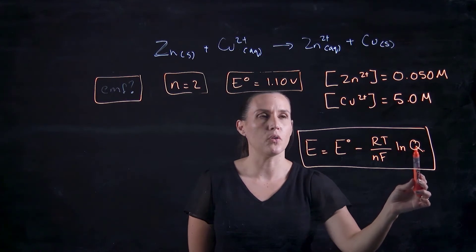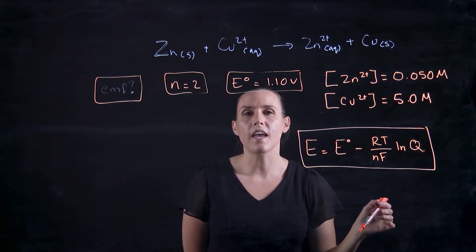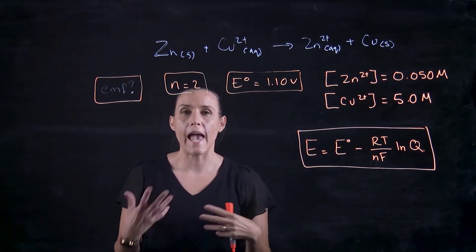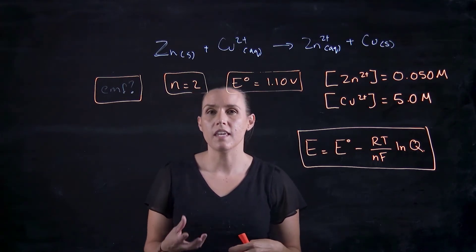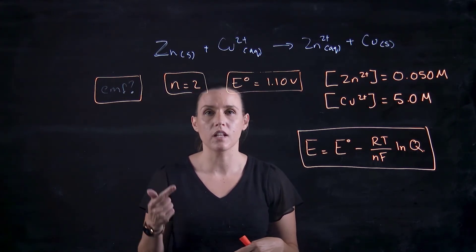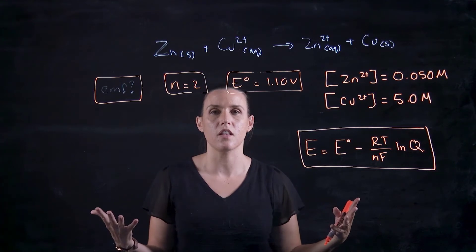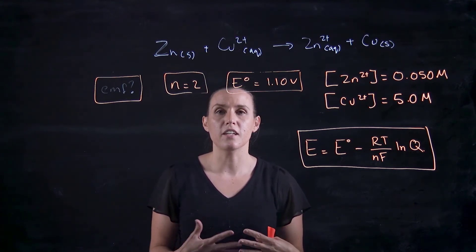And then it's Ln Q. So when we're working out our Q, we look at the aqueous things or the gases. So we don't look at the solids or the liquids because their concentrations are so large.